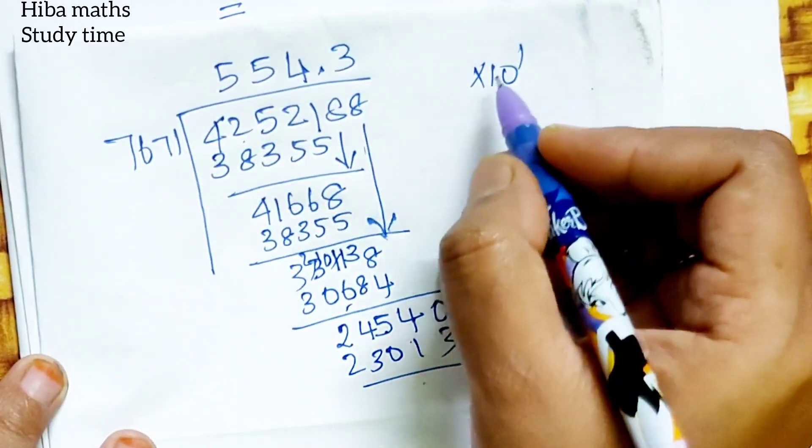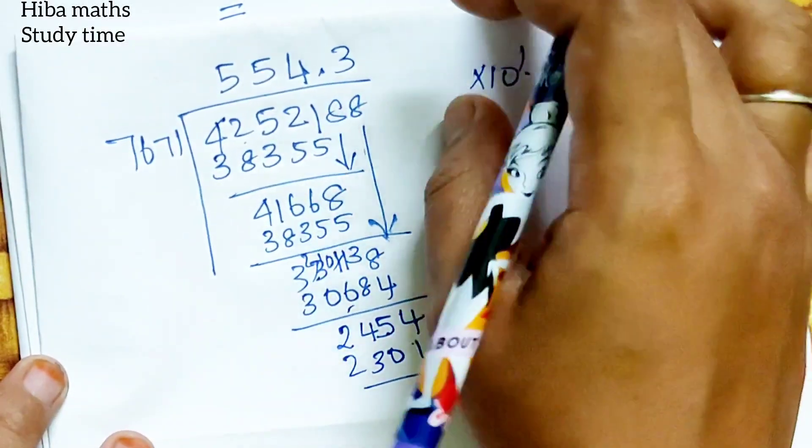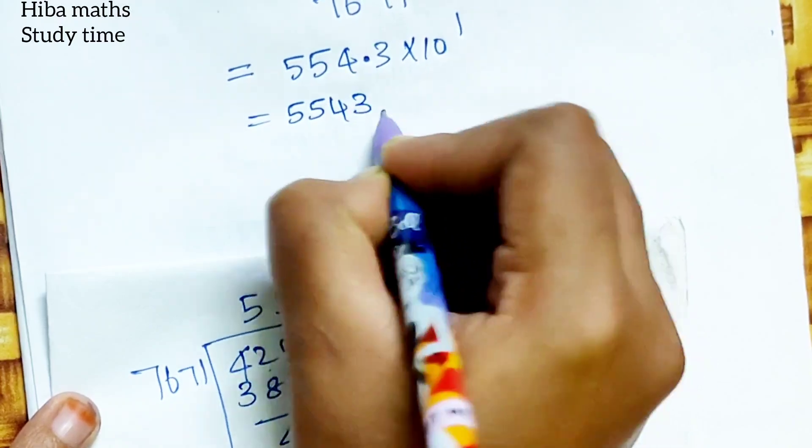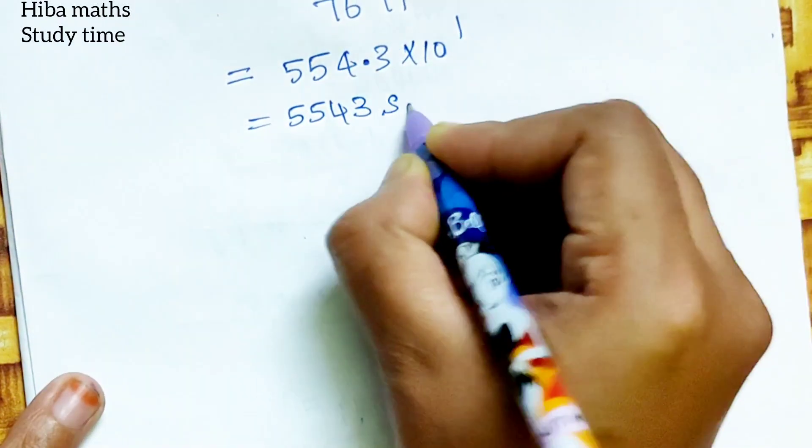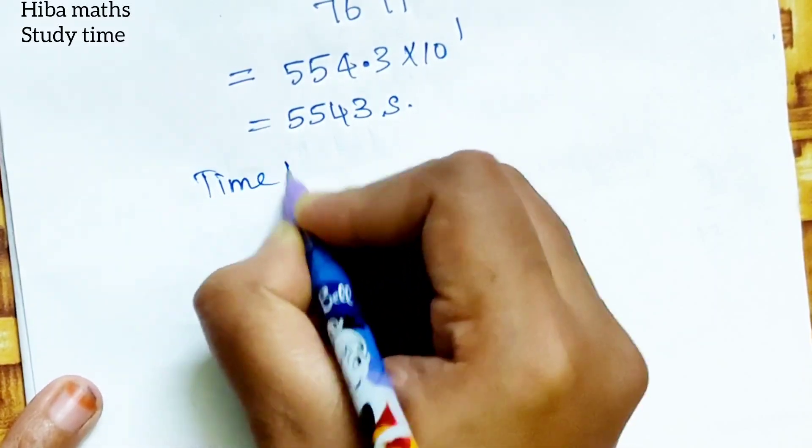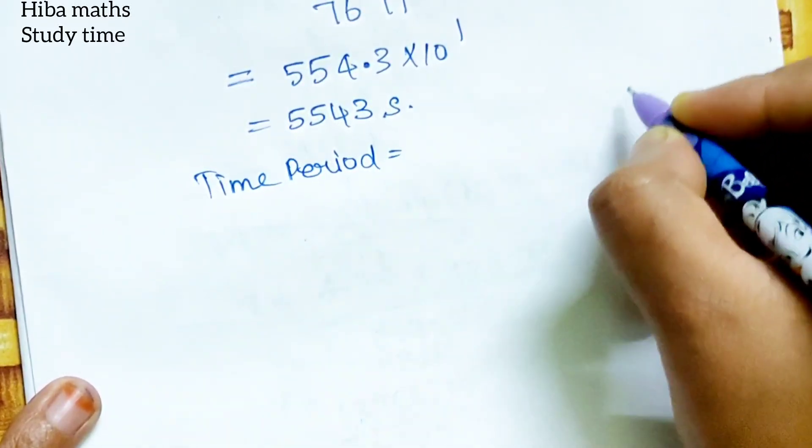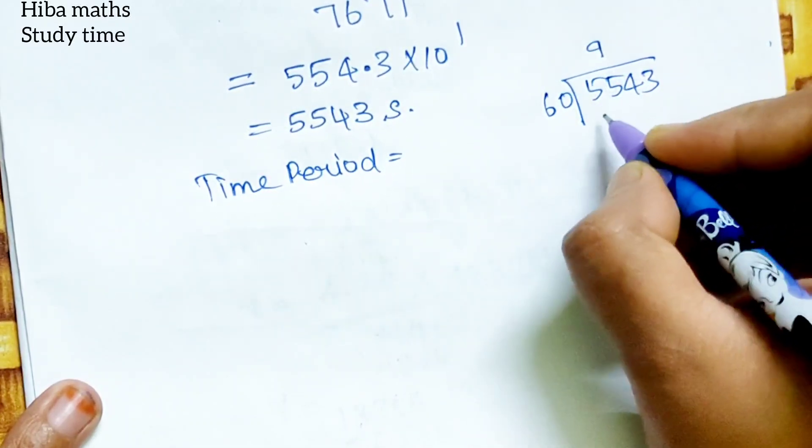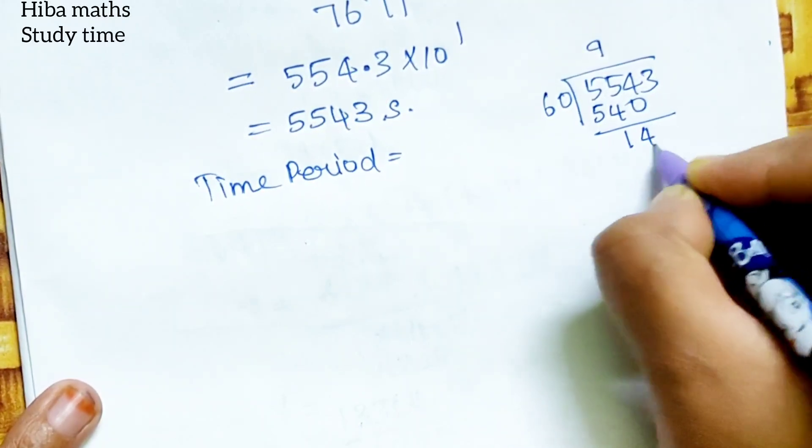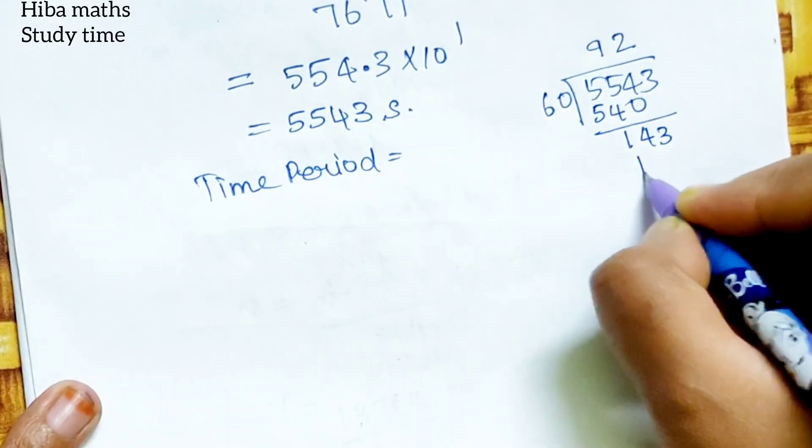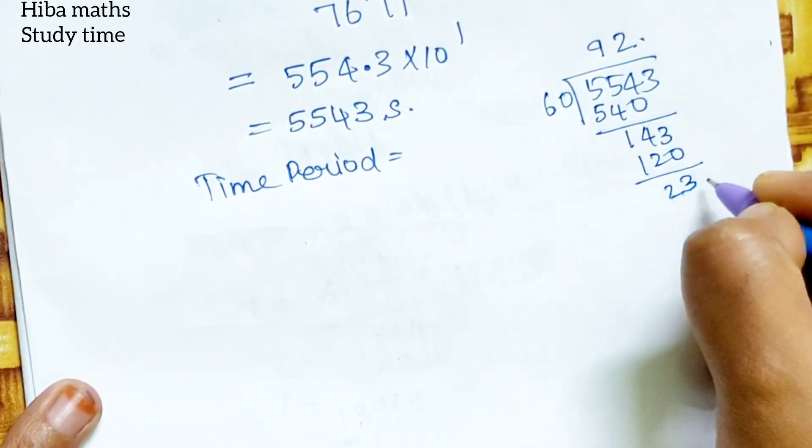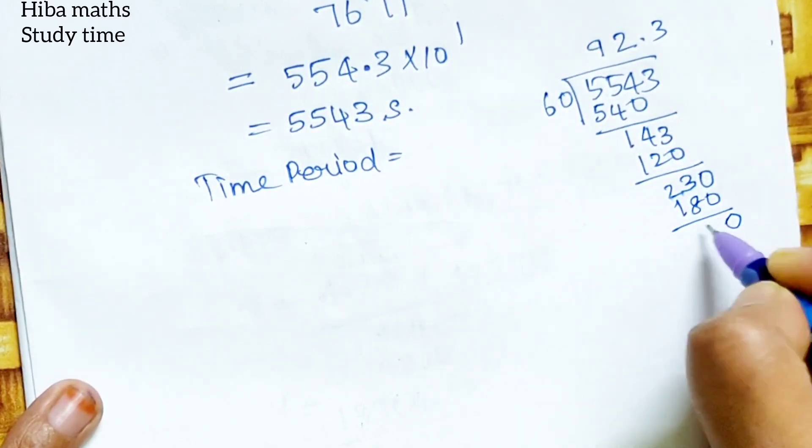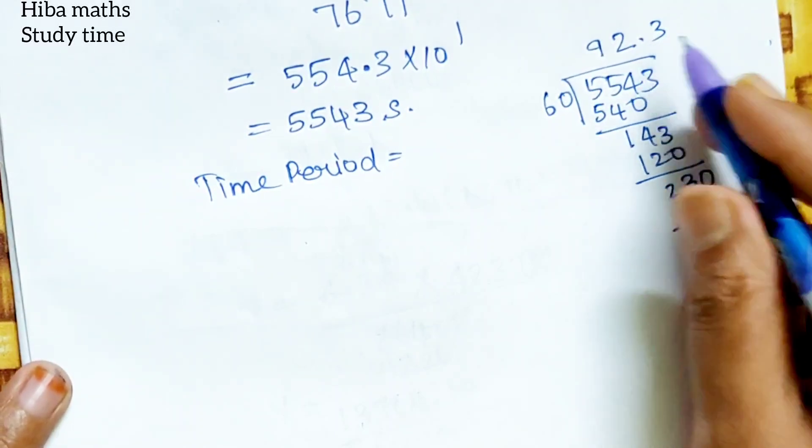10, 10, and this is 10^1. So we will be 5, 5, 4.3 into 10^1. So we will be 5,543. Now we will be in seconds. So we will be divided by 60. Time period is equal to 5,543 divided by 60. 6×9s are 54, 0, 1, 4, 3, 16 into 2, 120. 3 to 0.2, 6, 3s are 18, 180, 0, 5. So up to 92.3.